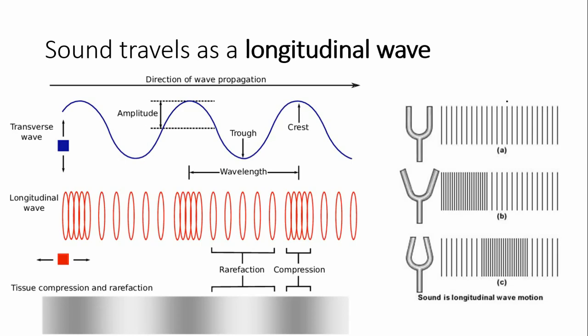Let's talk more specifically about what a sound wave is. Before we talked about a transverse wave — that's our sine-looking wave — where amplitude is displacement from equilibrium, we have trough and crest, and wavelength is the distance between the tips of those crests. But when we're talking about sound, sound is what we call a longitudinal wave.